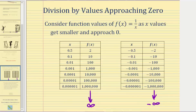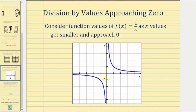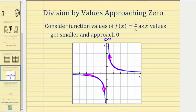Let's also take a look at this graphically. Here we have the graph of f(x) = 1/x. Notice as x approaches zero from the right or positive side, we'd be moving in this direction along the function, and the function values are increasing without bound, so f(x) is approaching positive infinity. As x approaches zero from the left or negative side, we'd be moving along the function in this direction, and the function values are decreasing without bound, so f(x) is approaching negative infinity.